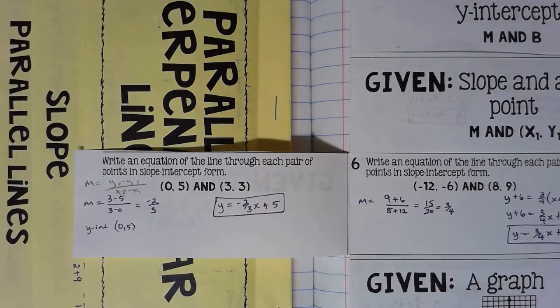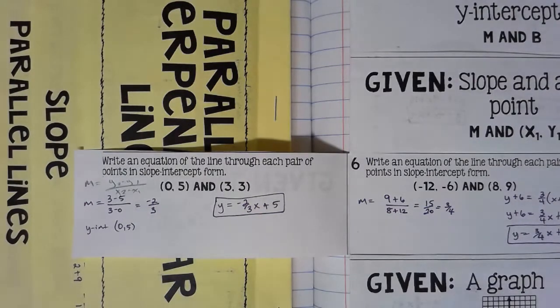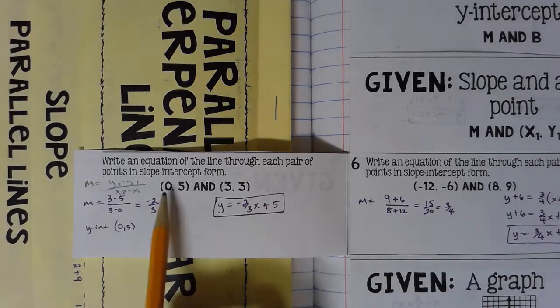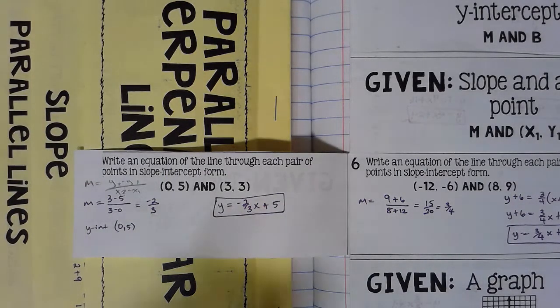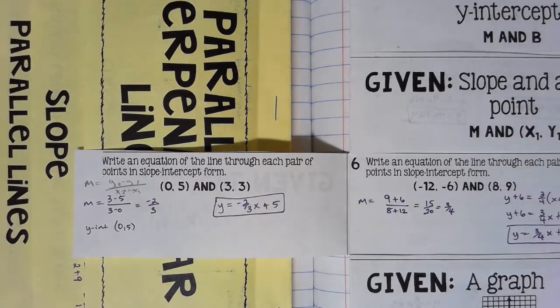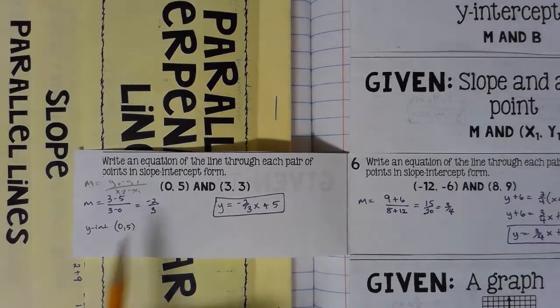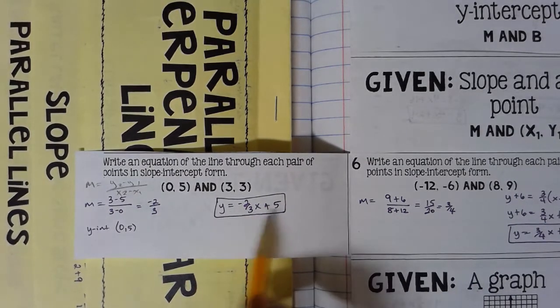Now I've got a slope of negative 2 thirds and I've got two points. You might think to use point-slope form, and that will work. But let's think smarter, not harder. Look at our points — one of them is 0, 5. We recognize 0, 5 as being the y-intercept, because any time a point has 0 for its x, it is going to be a y-intercept. So if I've got the slope and the y-intercept, I can go straight to slope-intercept form: y equals negative 2 thirds x plus 5.